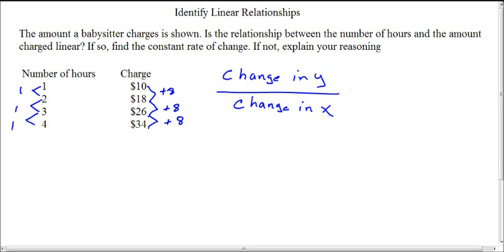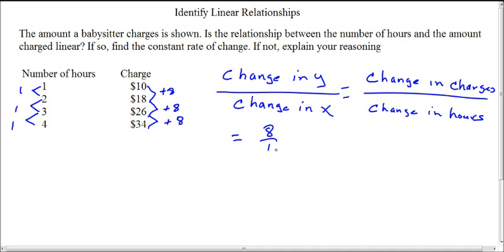So in that case, I can say I have the change in charges over the change in hours. So saying that, I see I have eight over one, and I have eight over one for all three quantities.